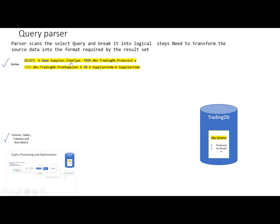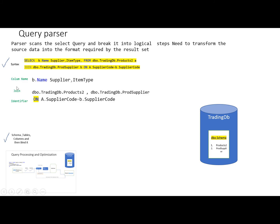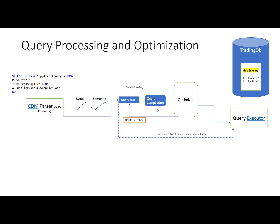Now the query parser will break this query into logical steps. The column names will be separated, then the join will be broken down, and the identifier joining the two tables will also be broken up. If a WHERE clause is used, that will also be broken up by the query parser. All these logical steps will form a logical tree known as the query tree, also known as the query sequence.